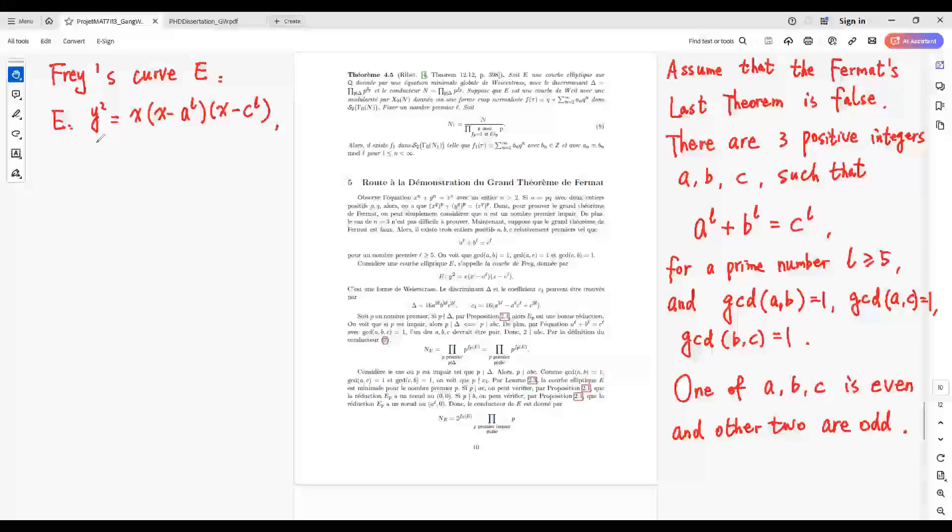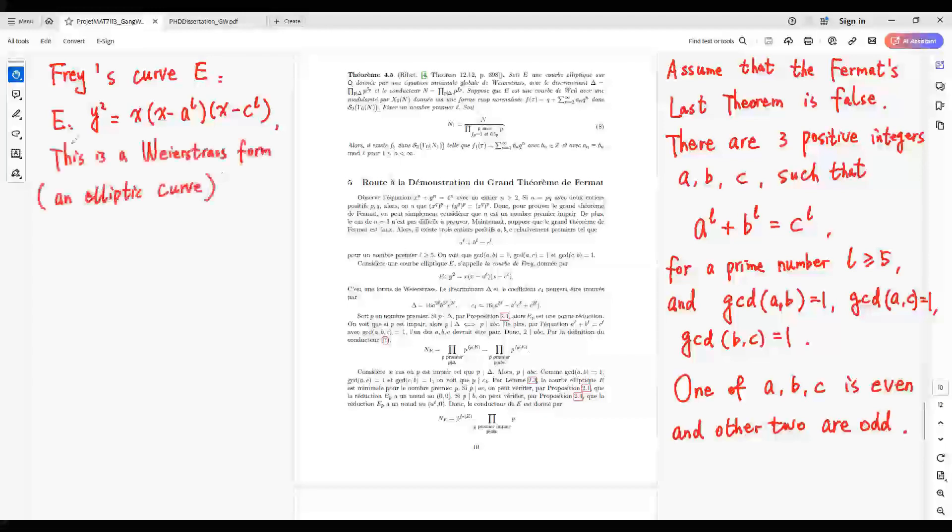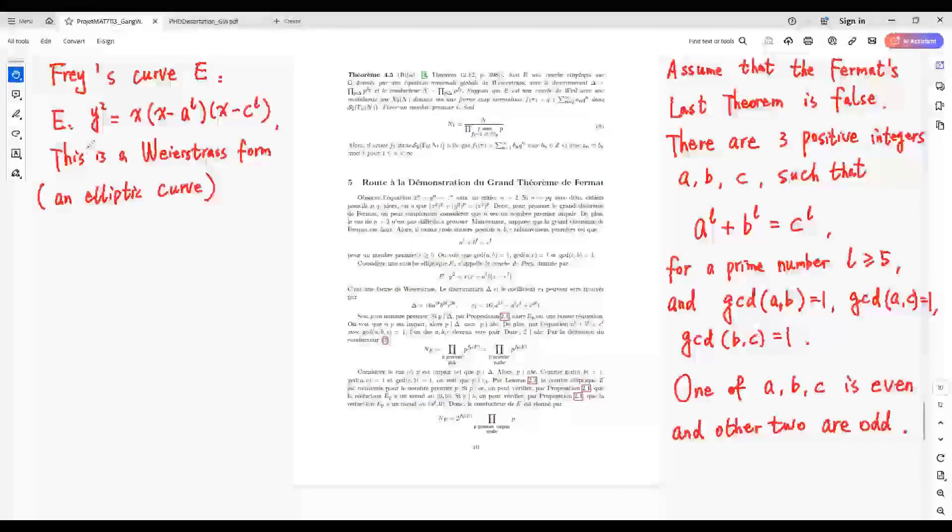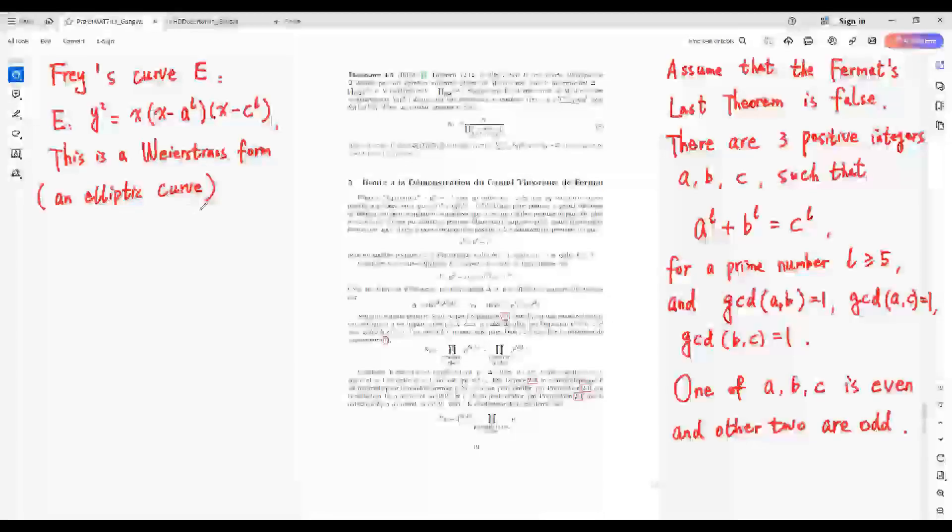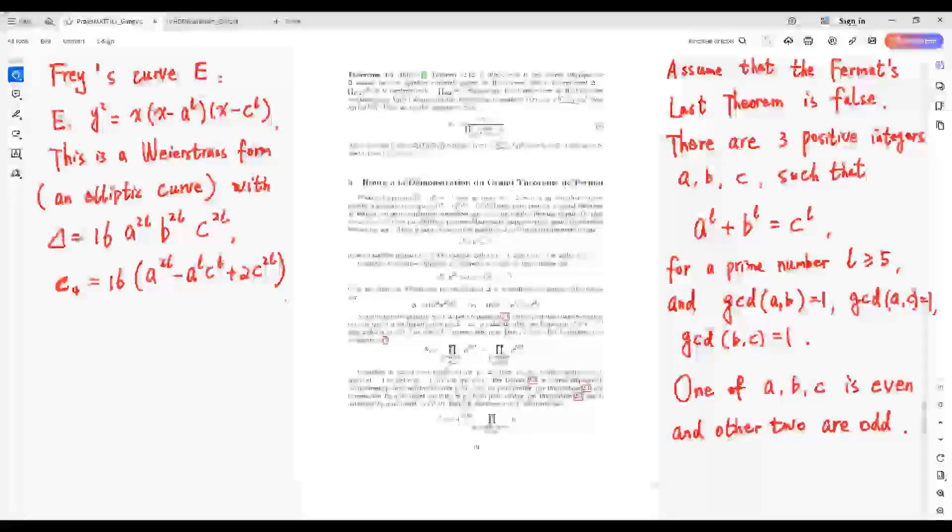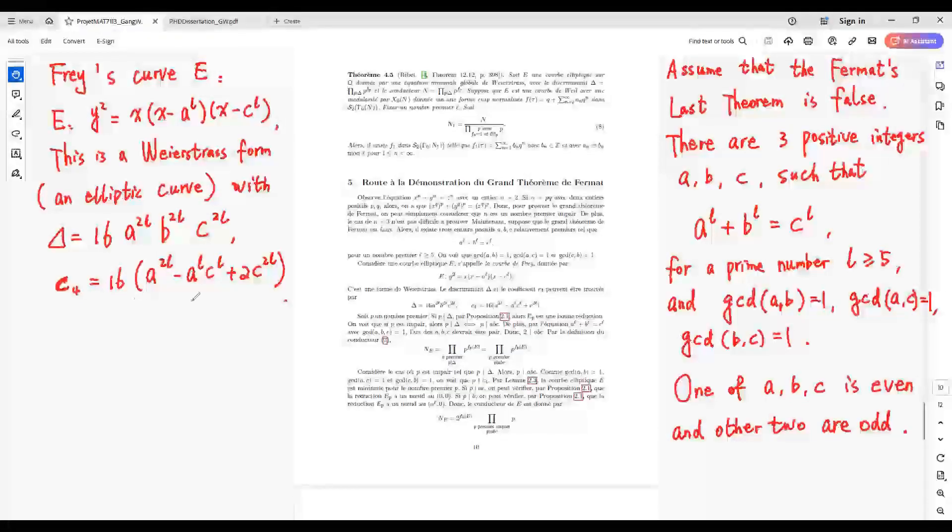Now, Frey's Curve is defined by this equation. This is a Weierstrass transform. So E is an elliptic curve with the discriminant delta equals this one and C4 equals this one.